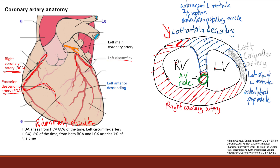So this one is a stable papillary muscle — it's not very likely to get infarcted because it has a double supply of blood. We're going to contrast that to the posterior medial papillary muscle in a second.